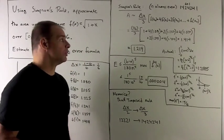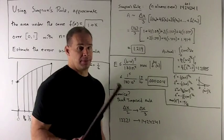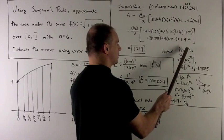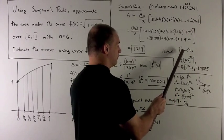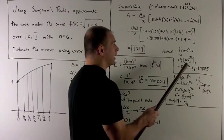To get the actual, we know from the fundamental theorem of calculus, number 1, we're going to take the antiderivative of 1 plus x to the half, evaluate that at 1 and 0, take the difference, and then that will be our area.